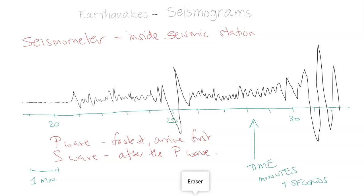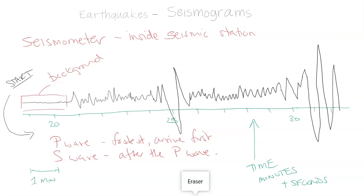We have minutes and seconds — minutes first and then seconds as the smaller unit of measurement. We have this squiggly, wiggly black line. Over here is the start — I know it's the start because we have a smaller number for time. Time moves in a certain direction, so here we have 20 minutes, 25, 30. This beginning part right here is called background vibrations.